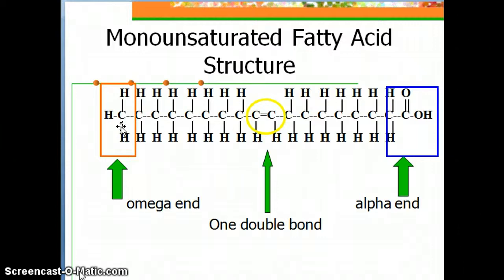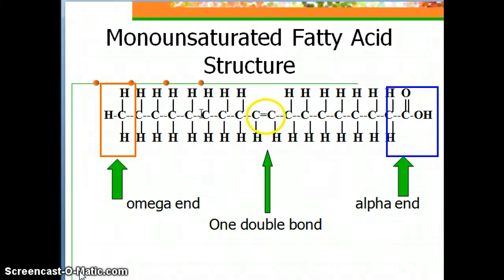When you have omega-3s and omega-6s, the number stands for the number of carbons from the omega end. So this monounsaturated fatty acid counts 1, 2, 3, 4, 5, 6, 7, 8, 9 carbons from the omega end to the double bond — so this would be an omega-9 fatty acid.